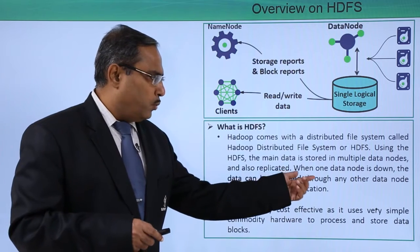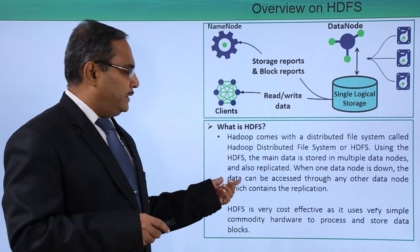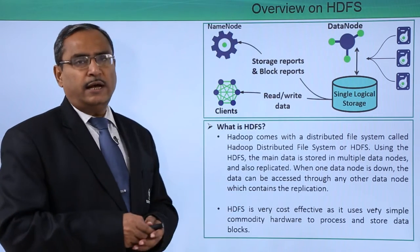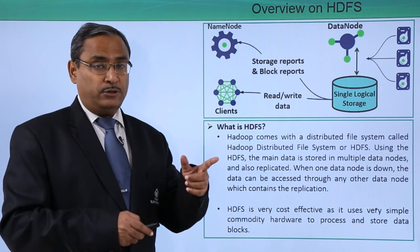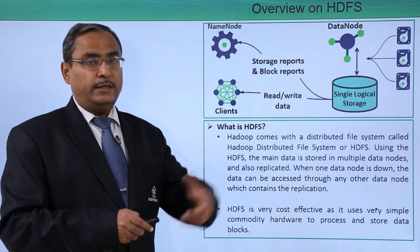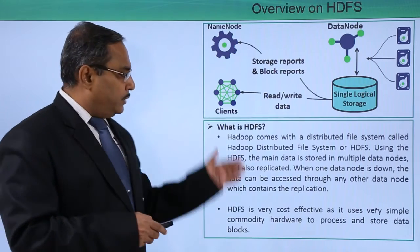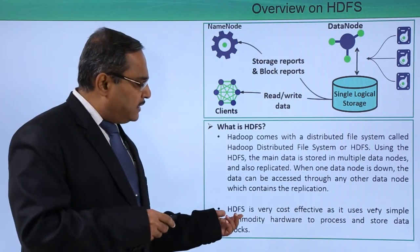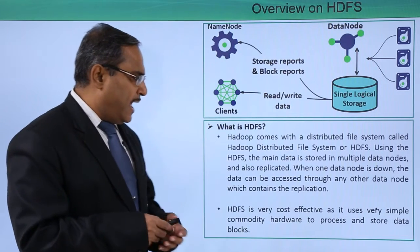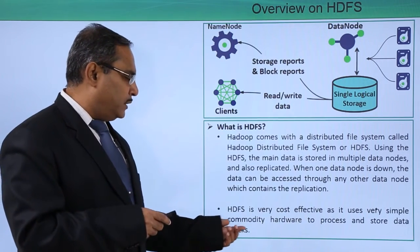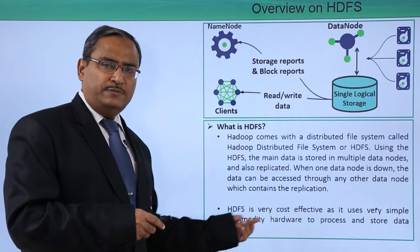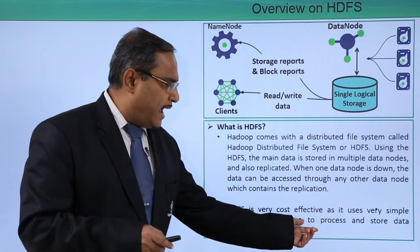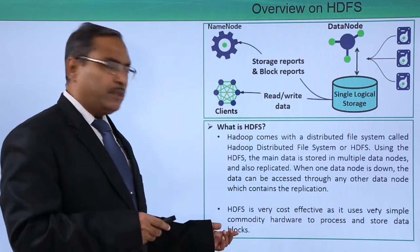When one data node is down, the data can be accessed through any other data node which contains the replication of that particular data. This is the main concept of HDFS. HDFS is very cost effective as it uses very simple commodity hardware — cheap hardware — to process and store data blocks.